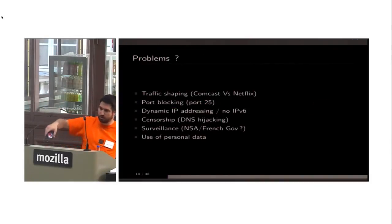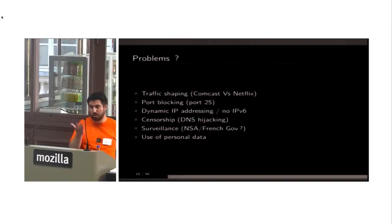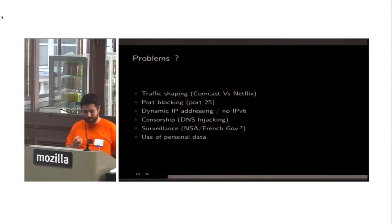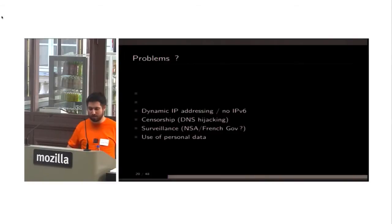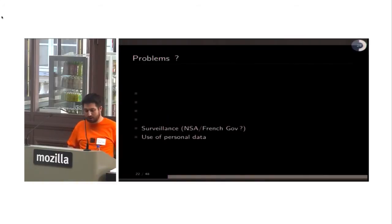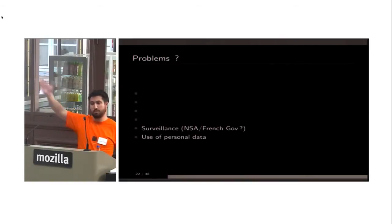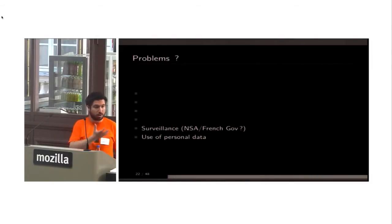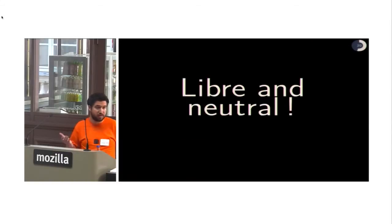With the Internet Cube: no traffic shaping, because the VPN is provided by one of the local non-profit ISPs with net neutrality as a core value. No port blocking, you have a static IP address and IPv6. About censorship — we don't censor anything. About surveillance, you can use another VPN, such as a Dutch one, from an organization you trust. About personal data — we don't care.